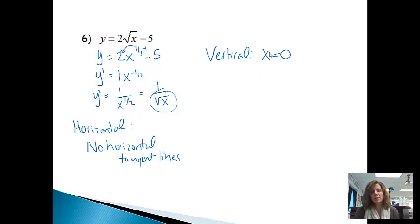So I did find a spot. We do want a point, so I do need the y value to go with the x value. So I'm going to put 0 up there for the x. That ends up giving me 2 times 0, which is 0. And if I subtract 5, I'll get negative 5. So there is a vertical tangent line at the point (0, -5).